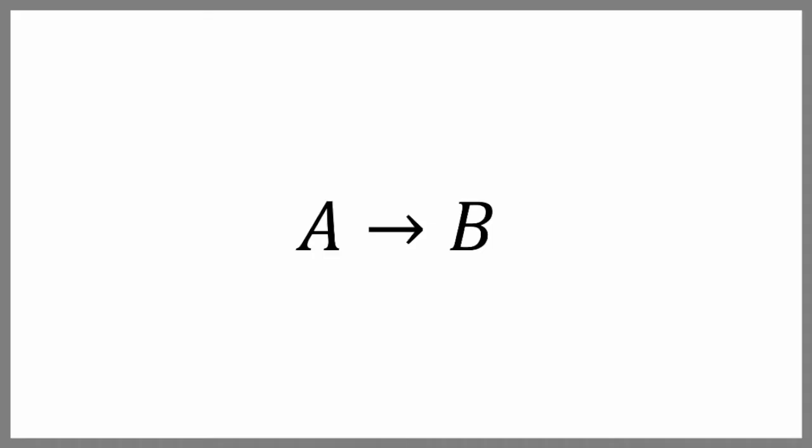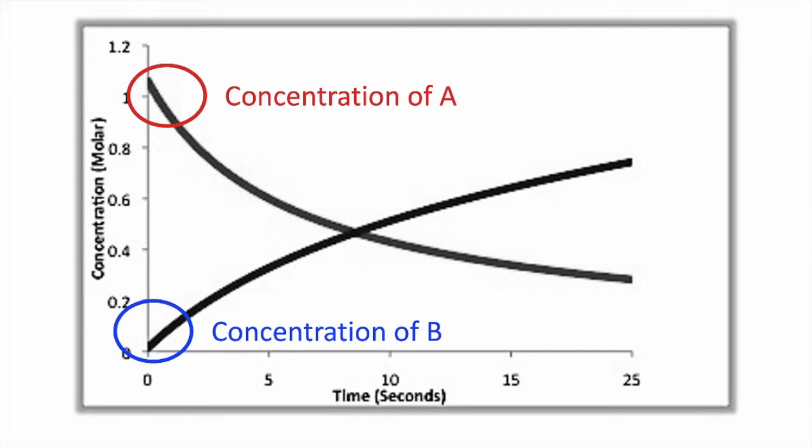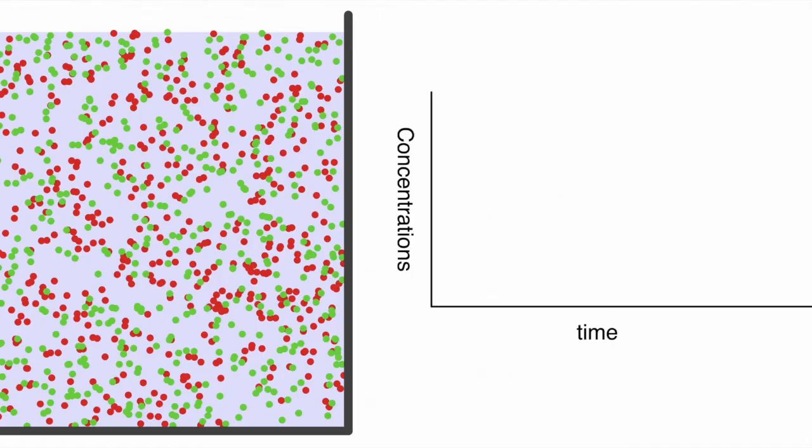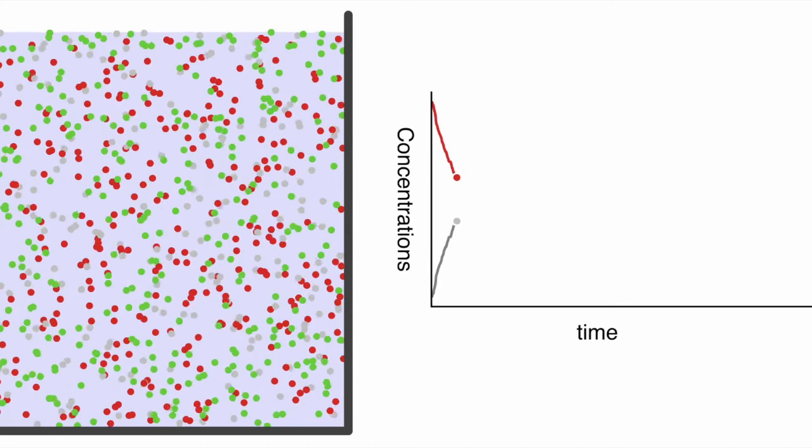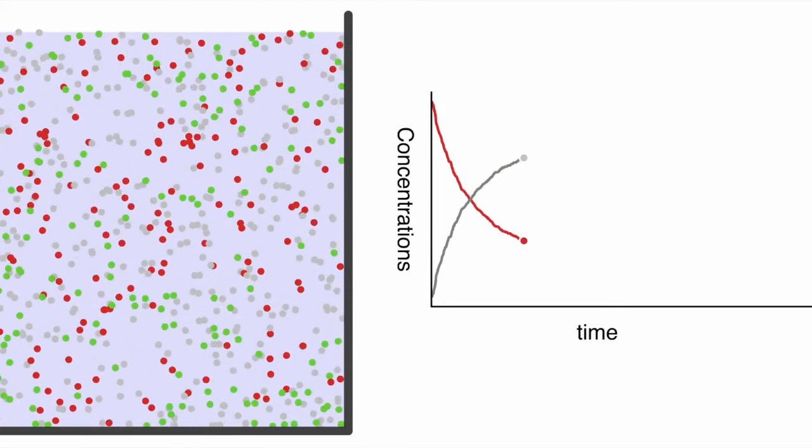Now let's take a look at the mathematics of this a little more closely. Let's consider a reaction in which we have a reactant A that's reacting to form a product B. If we plot the concentrations versus time, we'll get a graph like this one. Initially only reactant A is present and the concentration of B is zero because it hasn't been made yet. Over time the concentration of A decreases as A reacts to form more product B.